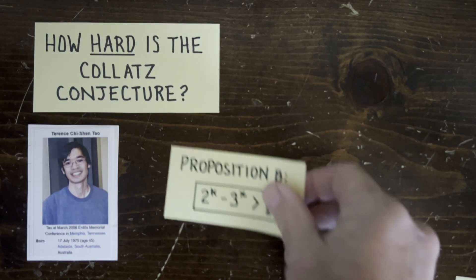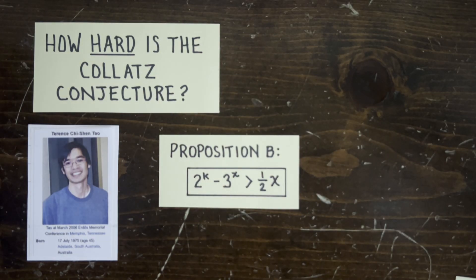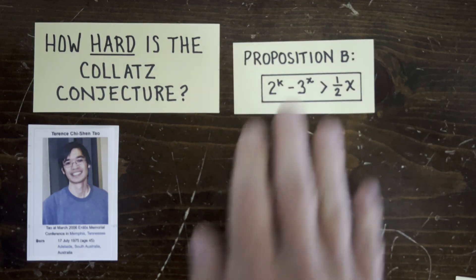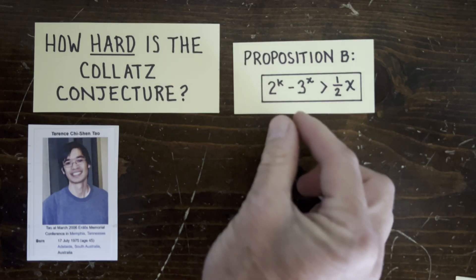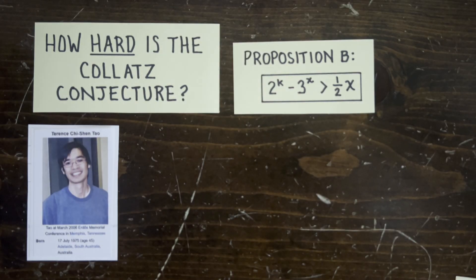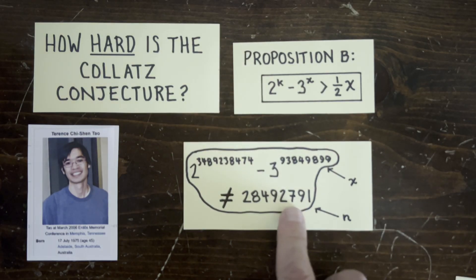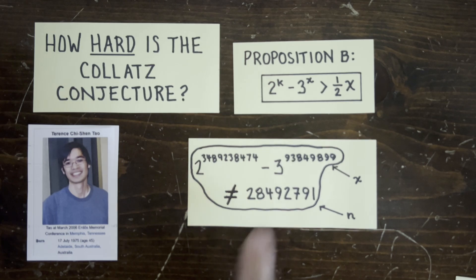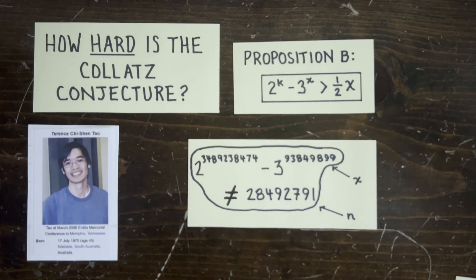Now consider Proposition B. For all integers k and x, 2 to the k minus 3 to the x is greater than a half of x. That is, the powers of 2 and 3 inexorably grow further and further apart as they get bigger. Can you prove this? If you could, then you'd know that this can't equal that without having to work out the arithmetic, not just for this case, but for any case where the right-hand side is less than one-half x.